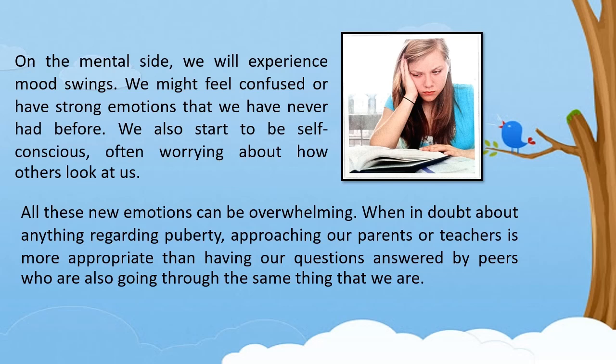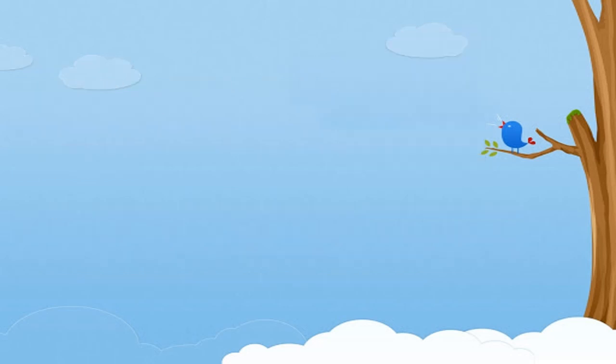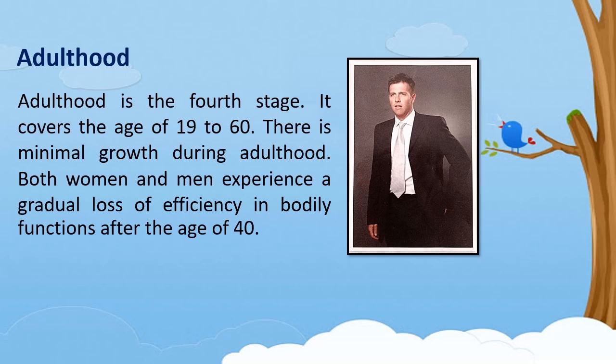The next stage is adulthood — the period in the human lifespan in which full physical and intellectual maturity have been attained. Adulthood is the fourth stage and covers the ages of 19 to 60. There is minimal growth during adulthood. Both women and men experience a gradual loss of efficiency in bodily functions after the age of 40, with slow gradual declines in body functioning during early and middle adulthood.